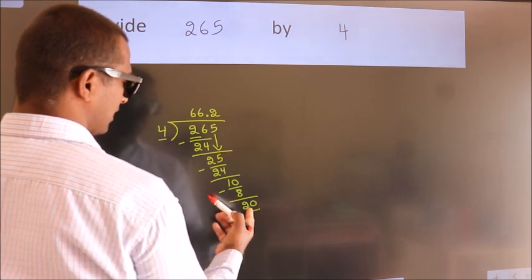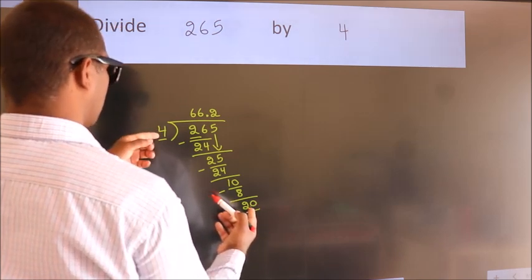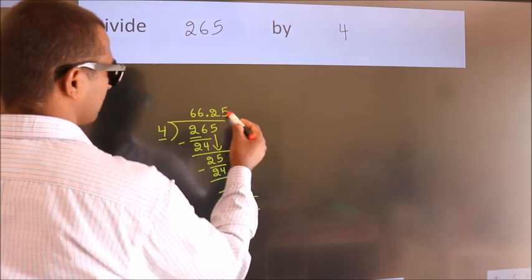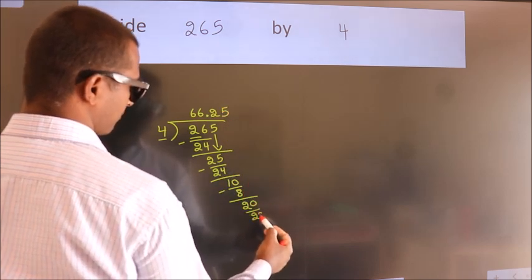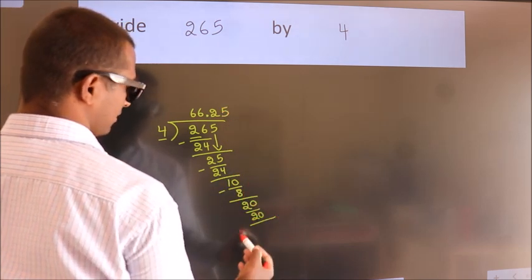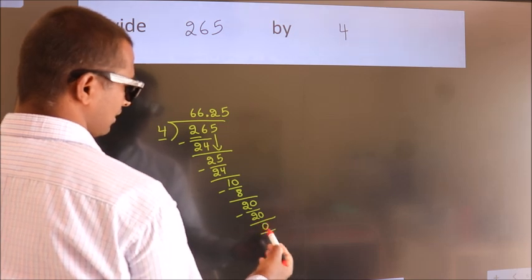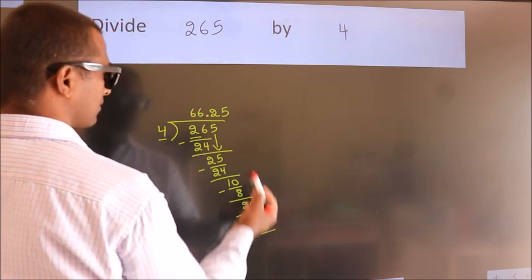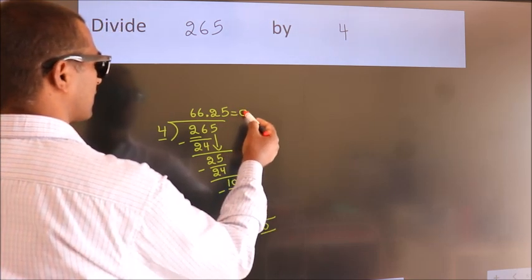When do we get 20 in the 4 table? 4 times 5 is 20. Now we subtract and get 0. We got remainder 0, so this is our quotient.